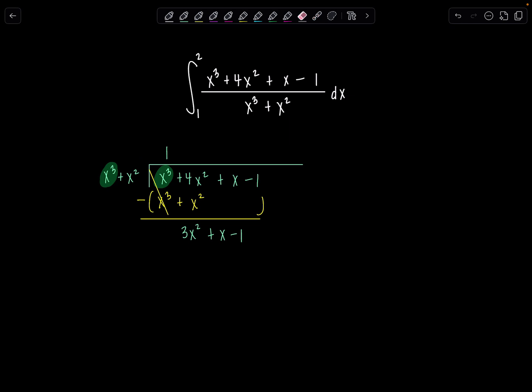So now we're ready to rewrite this integrand as follows. We have integral from 1 to 2. My quotient is just 1 plus it would be this remainder over the divisor, over the original denominator. We're going to have 1 plus all of this 3x squared plus x minus 1 over x cubed plus x squared dx.